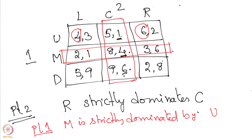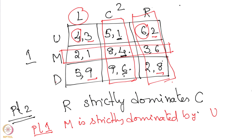After eliminating M, player 1 has U and D with payoffs 4, 6 and 5, 2 — neither dominates the other under both columns. But for player 2, the remaining columns L and R give payoffs 3, 9 and 2, 8. Since 3 and 9 are certainly higher than 2 and 8, player 2 will never play R. So we remove R as well. Now player 2 is forced to play only L.